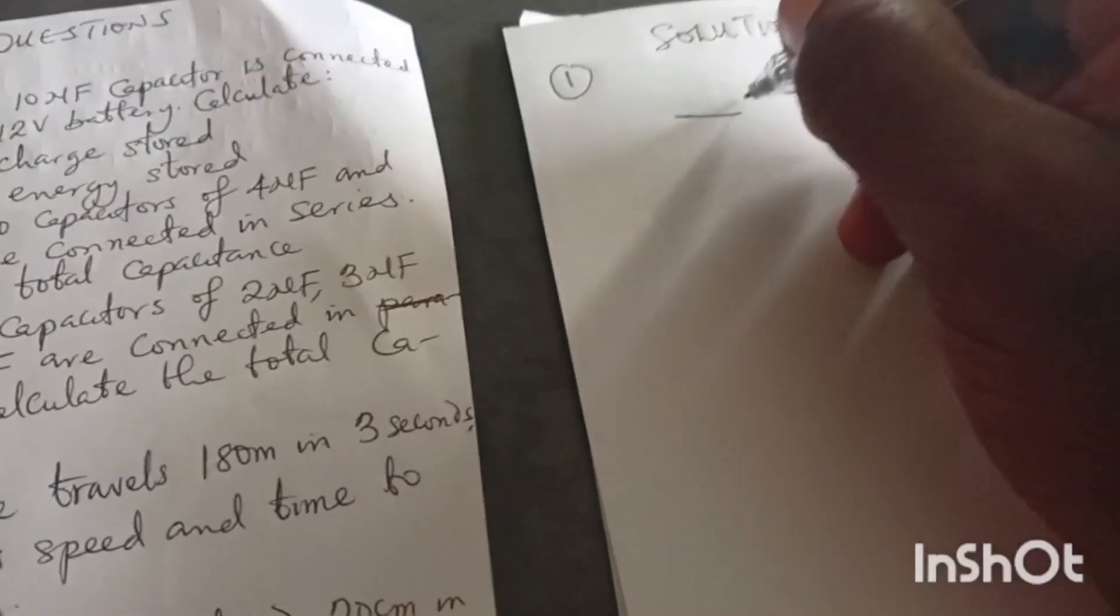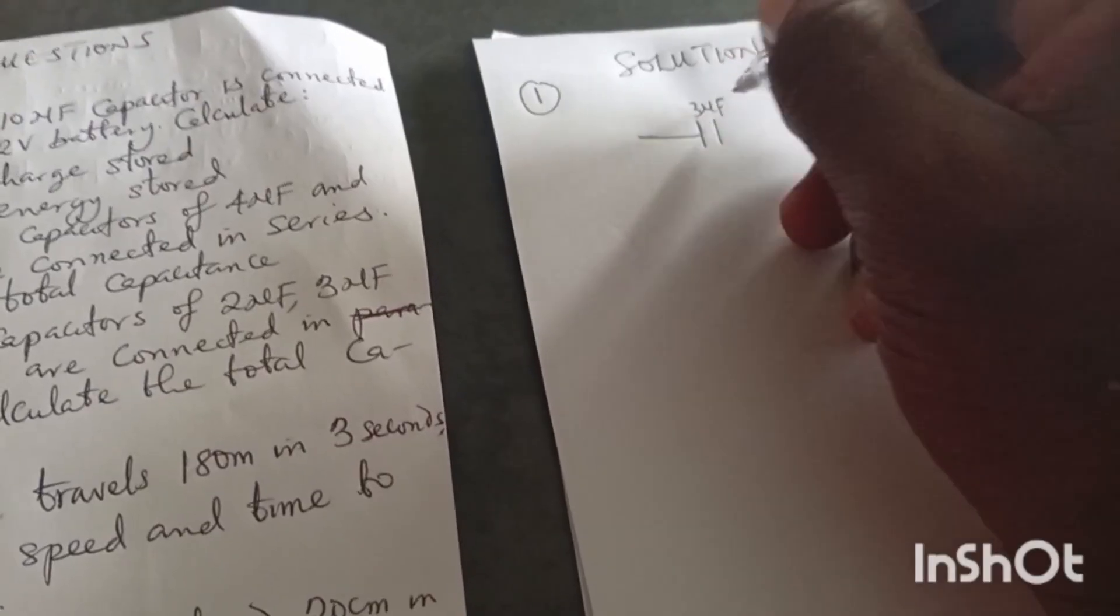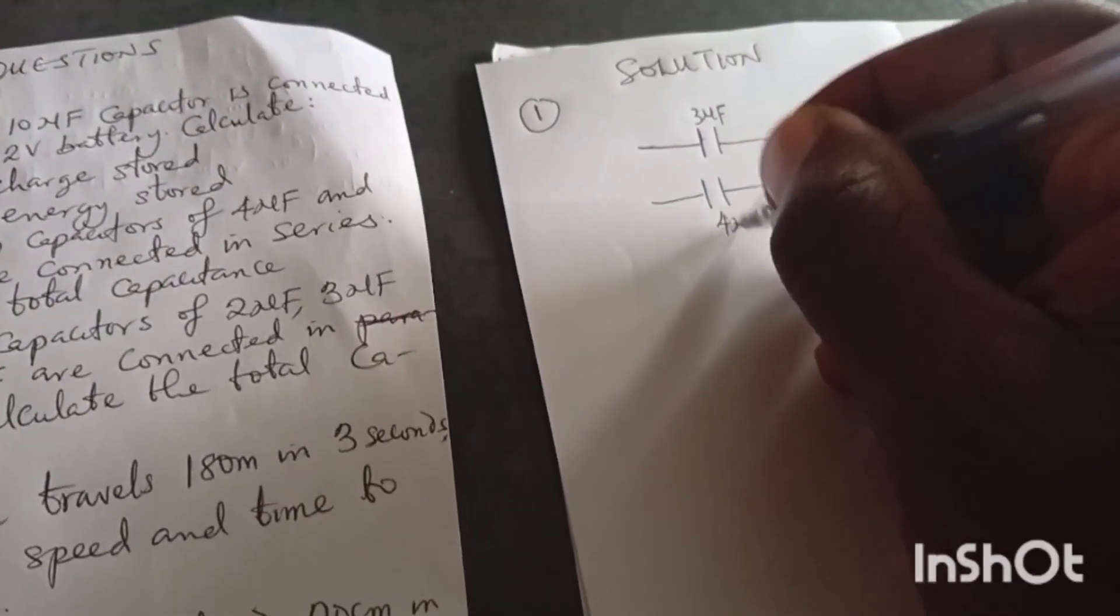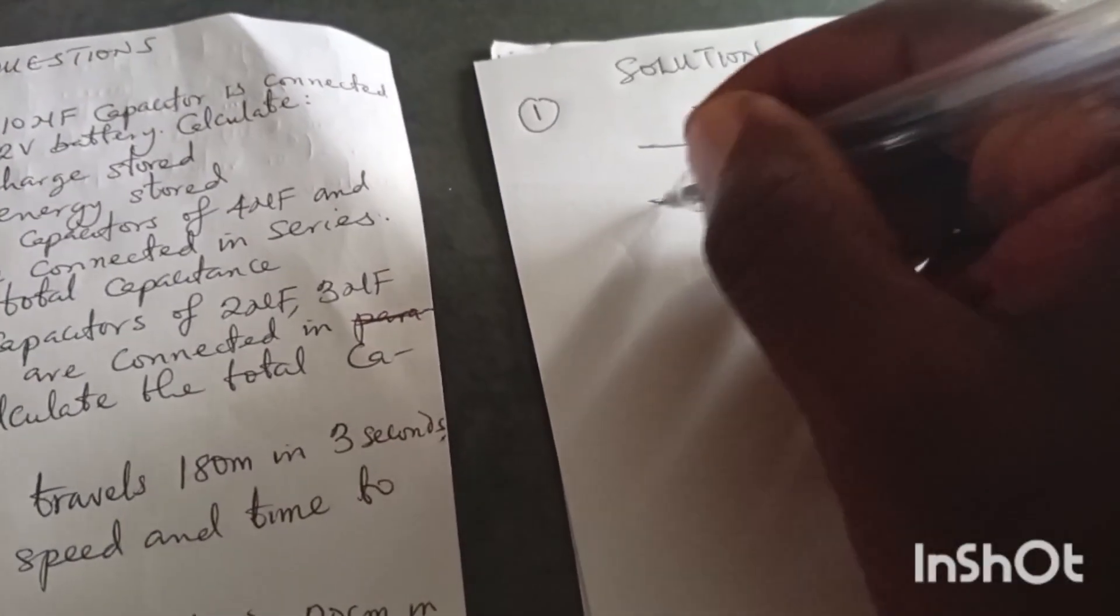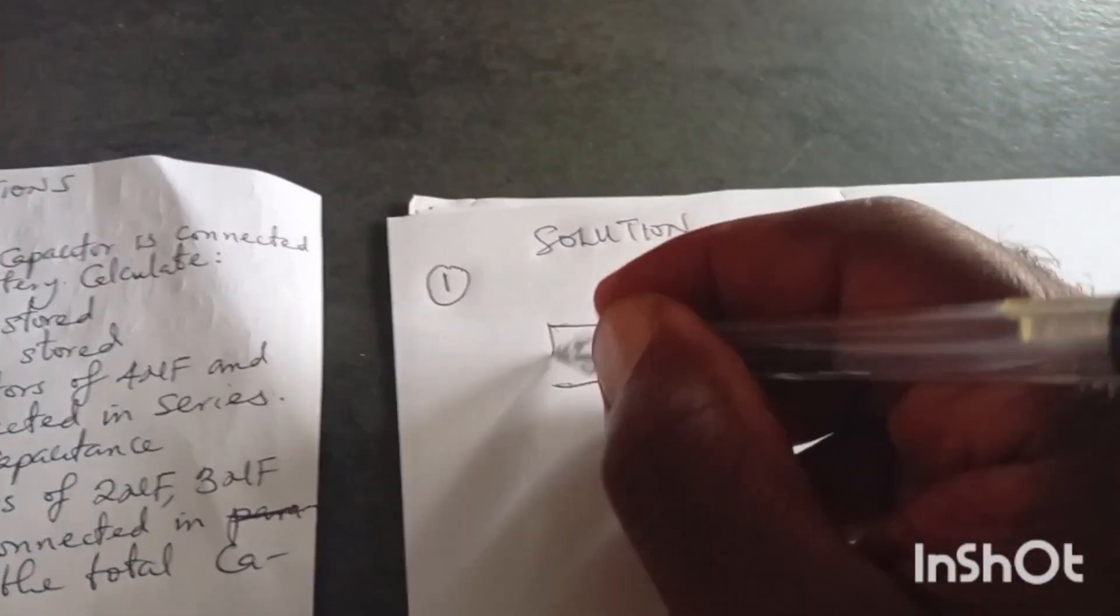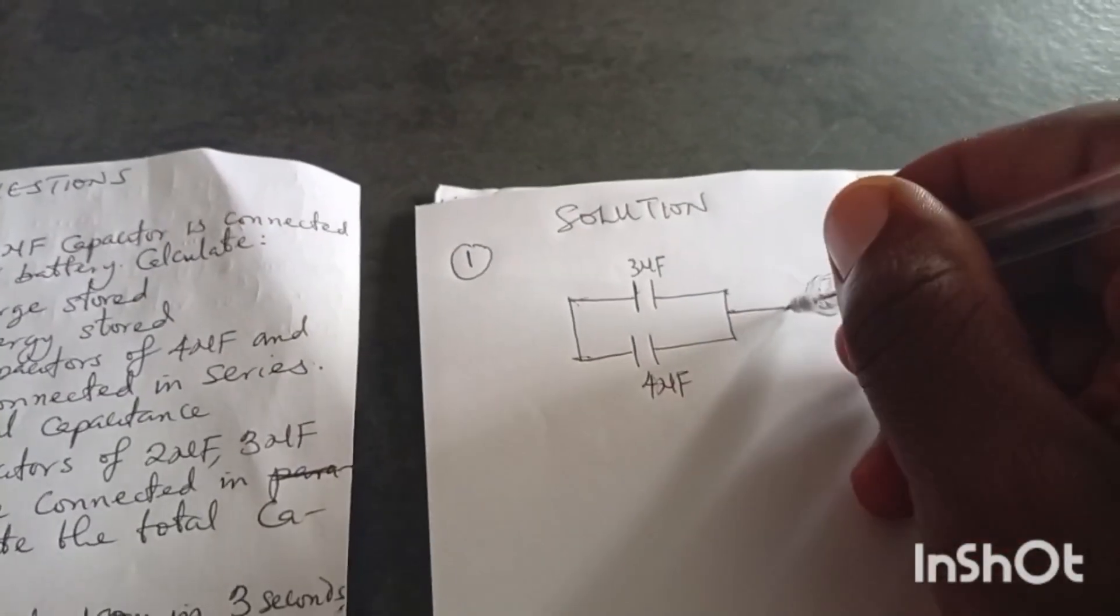So we have two capacitors: capacitor of 3 microfarads and capacitor of 4 microfarads. They are parallel. That's why you see parallel lines never meet.